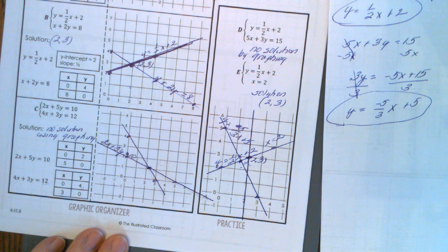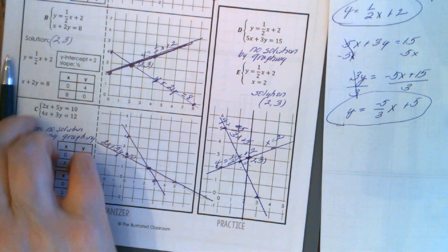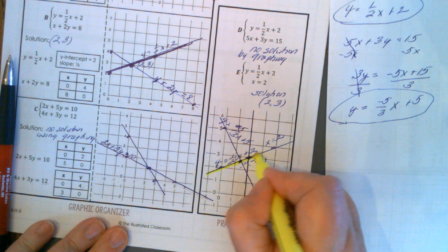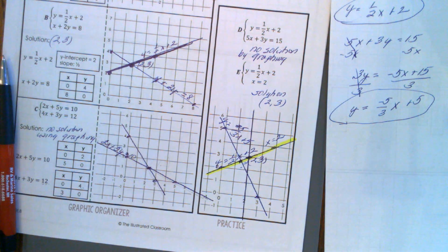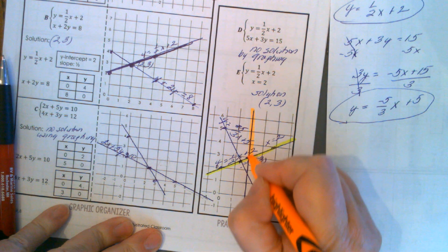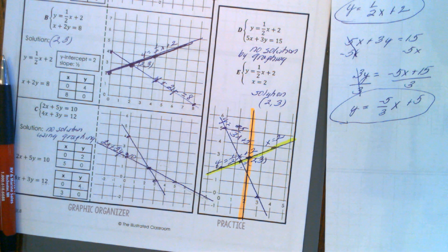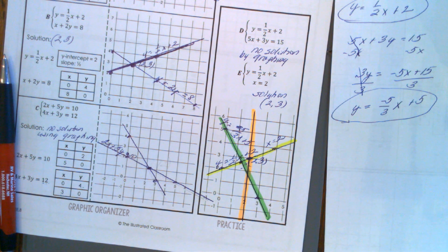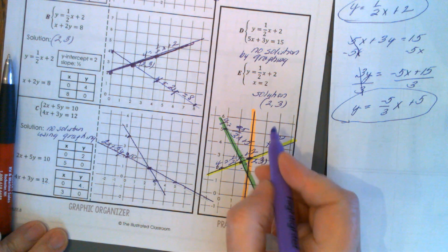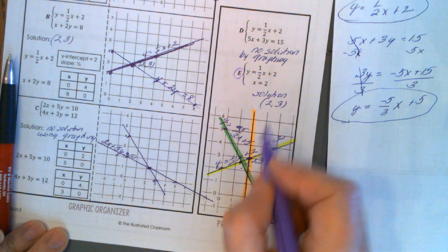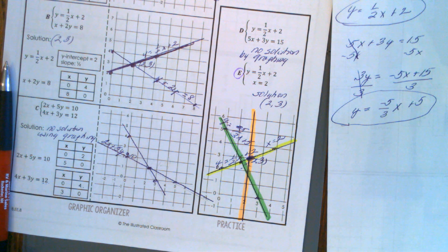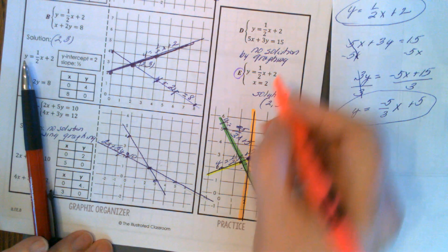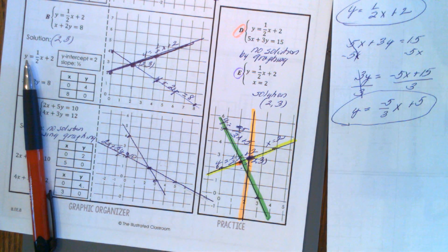To summarize: y=(1/2)x+2 and x=2 intersect at (2,3), which is a solution. The intersection of y=(1/2)x+2 and y=(-5/3)x+5 lands on a fractional point, so there's no clean solution by graphing. Let the teacher know if you have any questions, and pause and repeat if you need to.